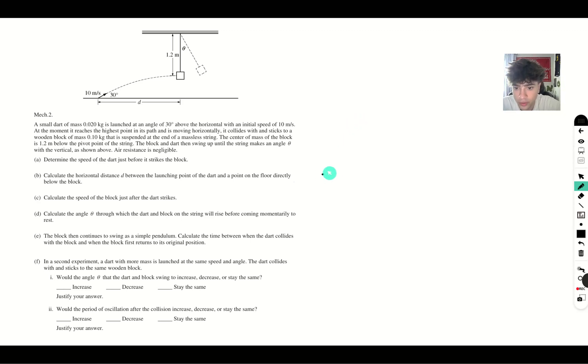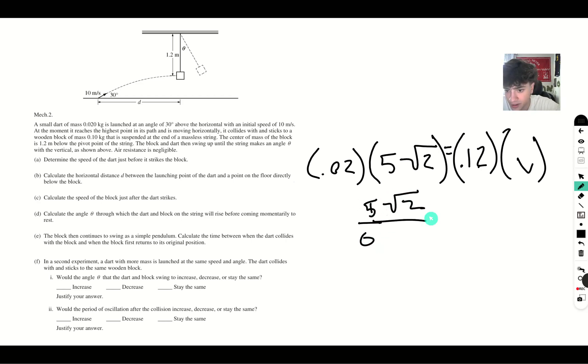We have 0.02, which is our mass, times our velocity, which is 5 root 2. And then we have the mass of this plus the mass of the block, which is 0.1. So we'll get equals 0.12 times our new velocity. When we get this, we'll get 0.02 divided by 0.12 is 1 sixth. So we'll get 5 root 2 over 6 is our new velocity.